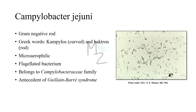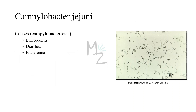As in this picture, you can see this S-shaped, curved-shaped, rod-shaped Campylobacter jejuni. Campylobacter jejuni is responsible for causing Campylobacteriosis — that's a broader term for any infection caused by this bacterium. But it actually causes enterocolitis and diarrhea, and if this infection becomes a systemic infection, it causes bacteremia.